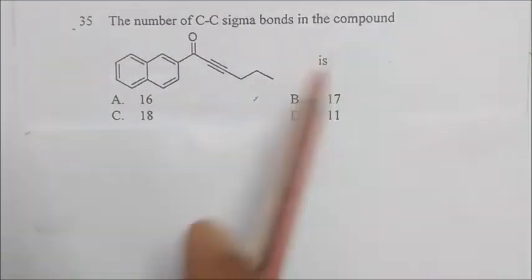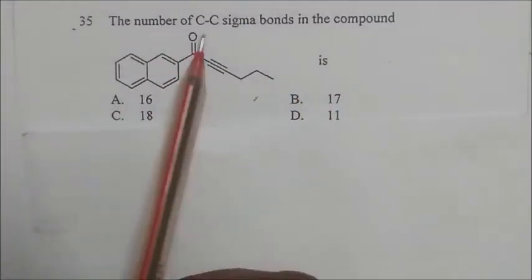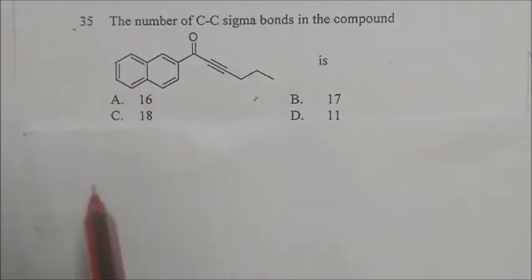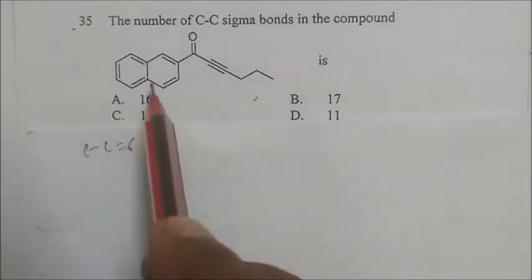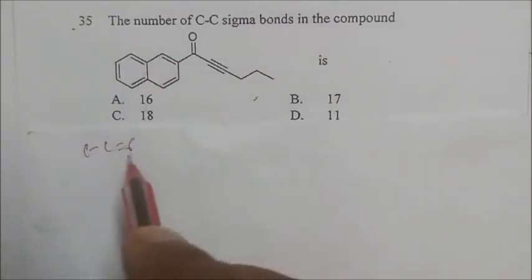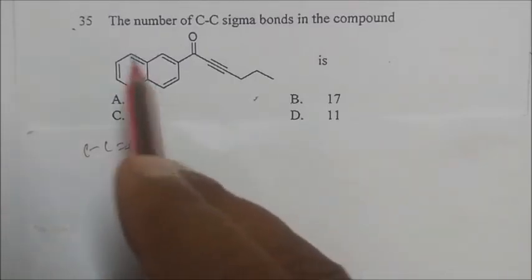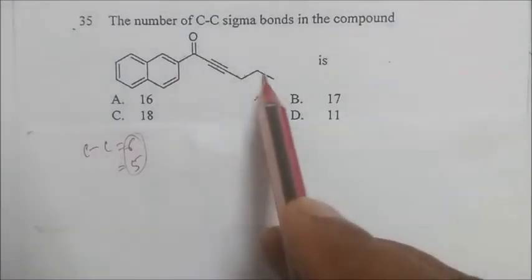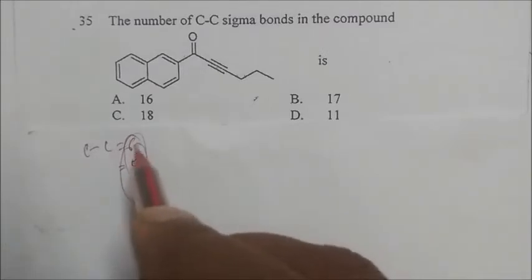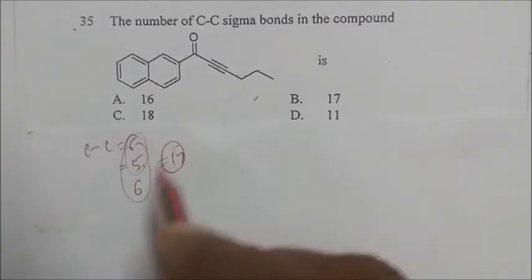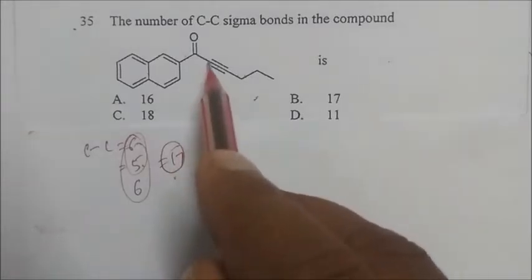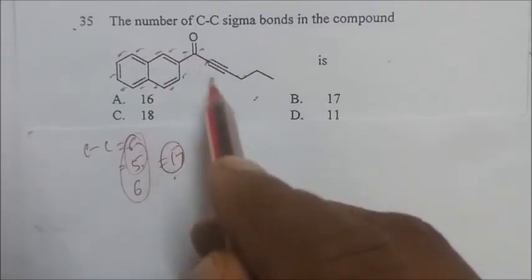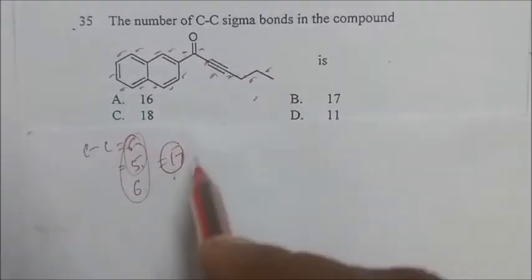The next question asks for the number of C-C sigma bonds in compound D. Counting only C-C sigma bonds: in the first ring there are 6, the next chain has 5, another segment has 6, giving 6 + 5 + 6 = 17 total C-C sigma bonds. The answer is B.